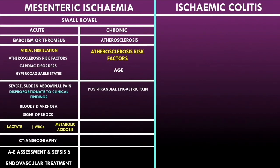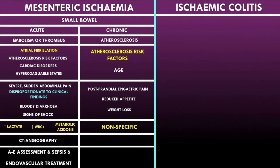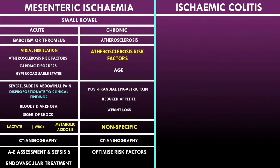The pain is usually quite dull. Because it occurs after eating, patients become scared of eating, leading to reduced appetite and subsequent weight loss. Investigations are generally non-specific compared to acute mesenteric ischemia, and the gold standard investigation is also CT angiography. Management revolves around optimizing atherosclerosis risk factors — stopping smoking, optimizing diabetic control, and better control of hypertension. For patients with severe symptoms, revascularization can be done, which can involve stenting.